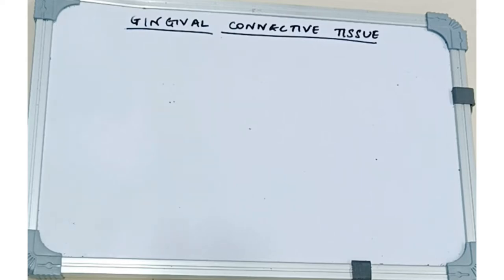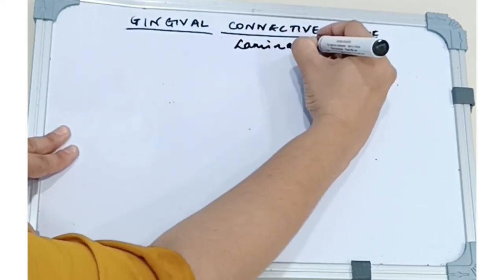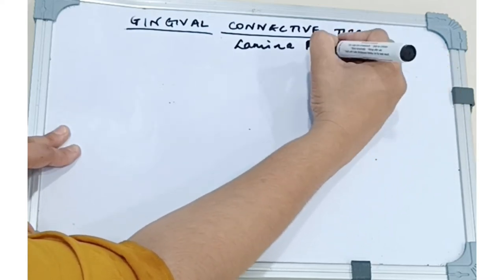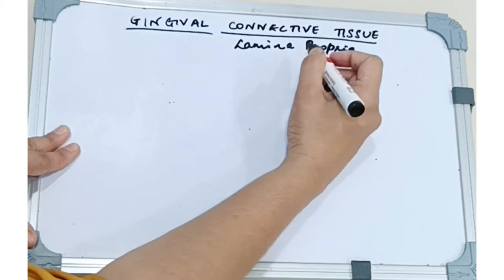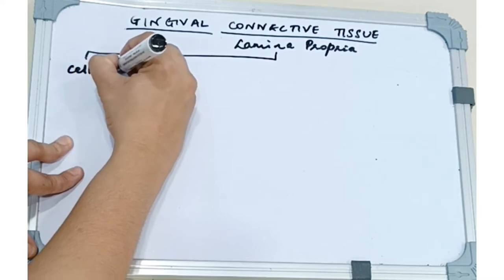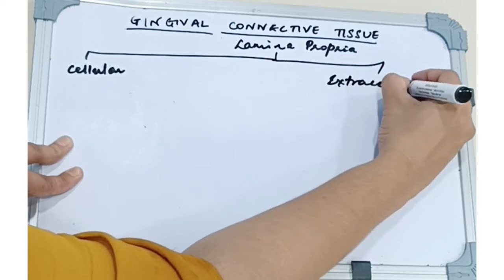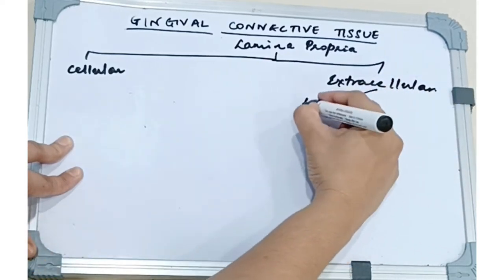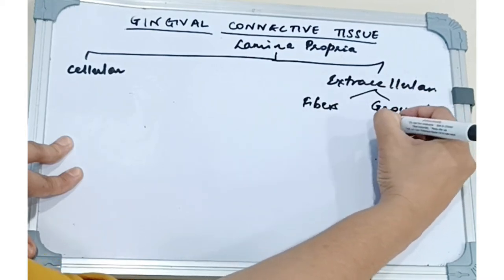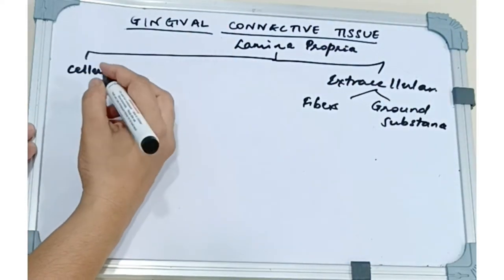Now the gingival connective tissue is also called the lamina propria and it contains two layers. We have the papillary layer and the reticular layer. The papillary layer is adjacent to the epithelium whereas the reticular layer is continuous with the periosteum. Now this has two components: the cellular component and the extracellular component.